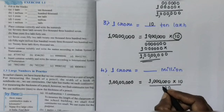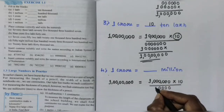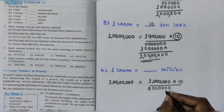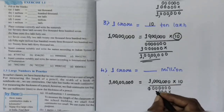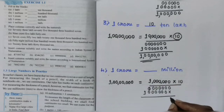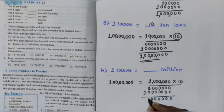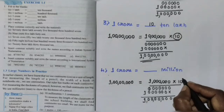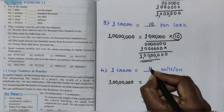Working through the multiplication steps: 0 into 0 gives 0 for all zero positions, and 1 ones are 1. Reading the place values: unit, 10, 100, 1,000, 10,000, lakh, 10 lakh, 1 crore. So 1 crore is equal to 10 million. The answer is 10 million.